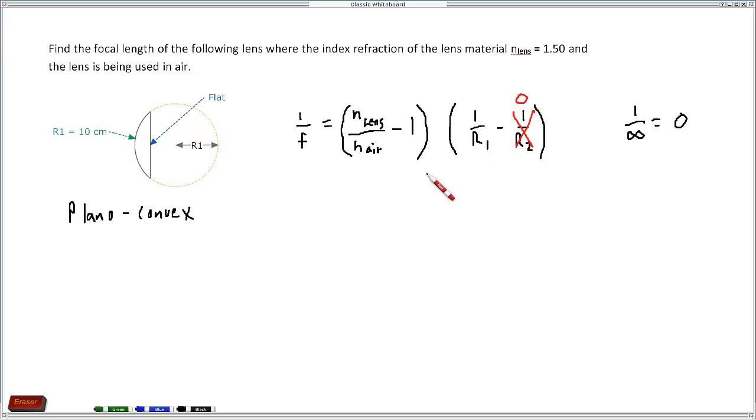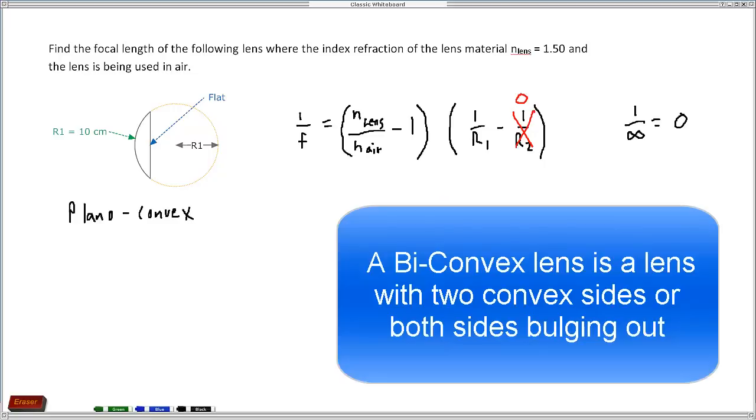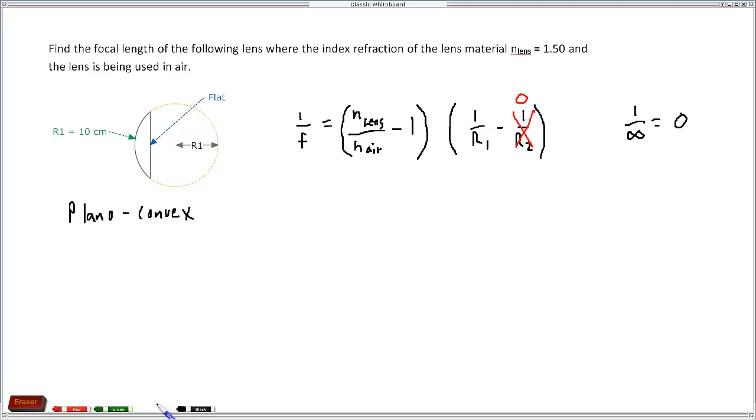So really the equation is simpler than it would be for a biconvex lens maker formula. So let's go ahead and put our values in here. We're going to put in 1 over the focal length.